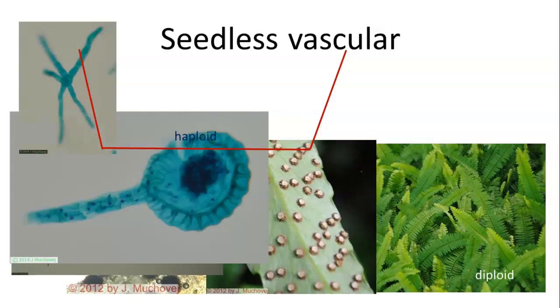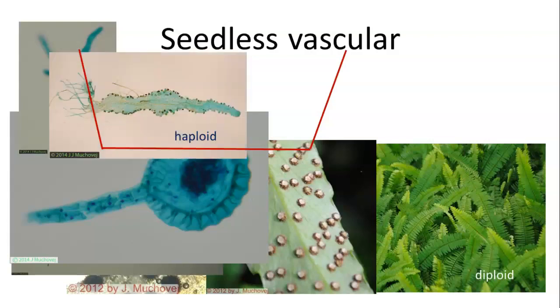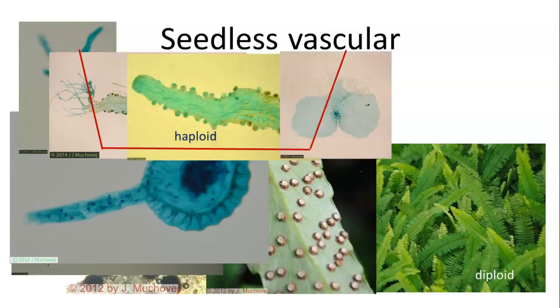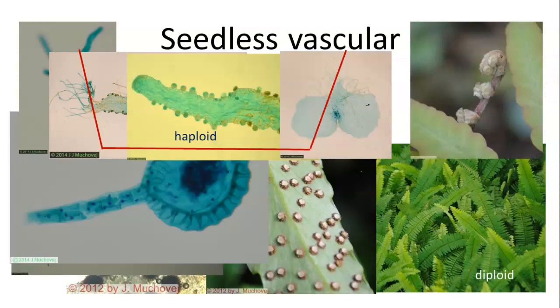When the spores get released, they germinate into these tiny little plants that are almost invisible. The tiny little plant releases sperm cells or egg cells, and it starts to grow. You get fertilization of the egg cell by the sperm cell, and that starts to grow up and increase in size. When that happens, you get a plant that looks like this, and out of that, you get these little fiddleheads, which turn into the diploid phase.